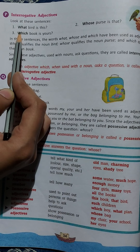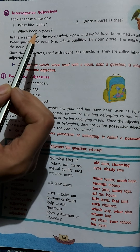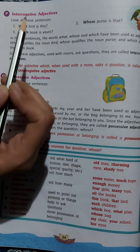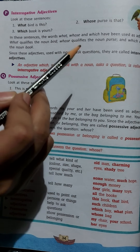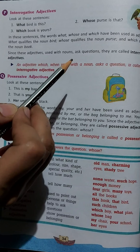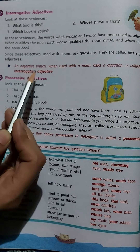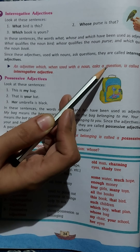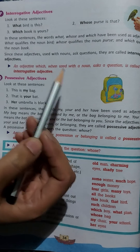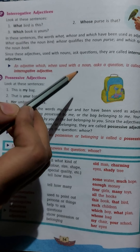So children, 'which', 'whose', 'what' — these words serve as interrogative adjectives. Interrogative adjectives describe a noun and also ask a question. As the book also says, an adjective which, when used with a noun, asks a question is called an interrogative adjective.